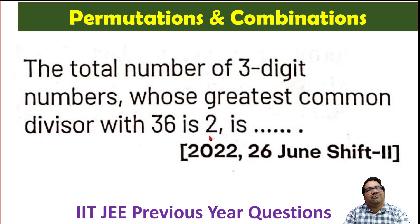GCD is 2, so it's a multiple of 2. But at the same time, the greatest common divisor itself is 2. And what are the divisors of 36?